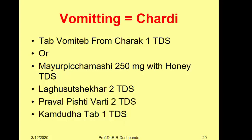In Ayurveda, vomiting is called Chardi. Ayurveda also has symptomatic management: Vomitab tablet from Charak Pharmaceuticals — syrup for children, tablet for adults, one tablet three times a day. Or Mayurpiccha Bhasma 250 mg with honey three times a day as a licking preparation. Alternatively, the combination of Laghu Sutashekhara tablet two TDS, Pravala Pishti Vati two TDS (a typical antacid), and Kamadudha tablet one TDS.